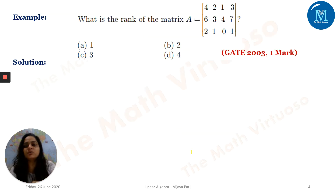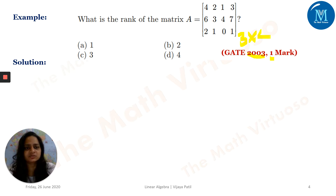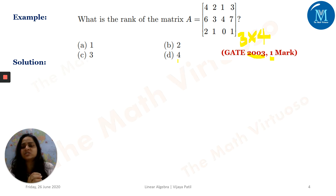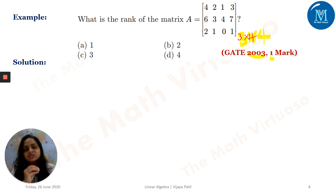This question is from the GATE examination, 2003, for one mark. The question asks: what is the rank of this matrix A? The order of this matrix is 3×4 — three rows and four columns. The possibilities are one, two, three, or four. Using the definition — order of highest order non-zero determinant — the highest order determinant possible in a 3×4 matrix is 3×3, not 4×4.